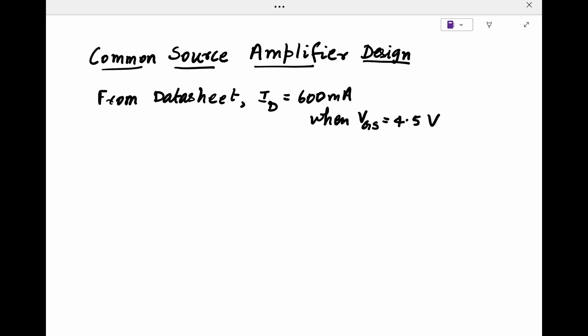When VGS is 4.5 volts, ID is 600 milliamps, and VDS is 10 volts. And this is much greater than the limit for the triode region, which is about 0.2 volts. The typical threshold voltage for this device is 2.1 volts.